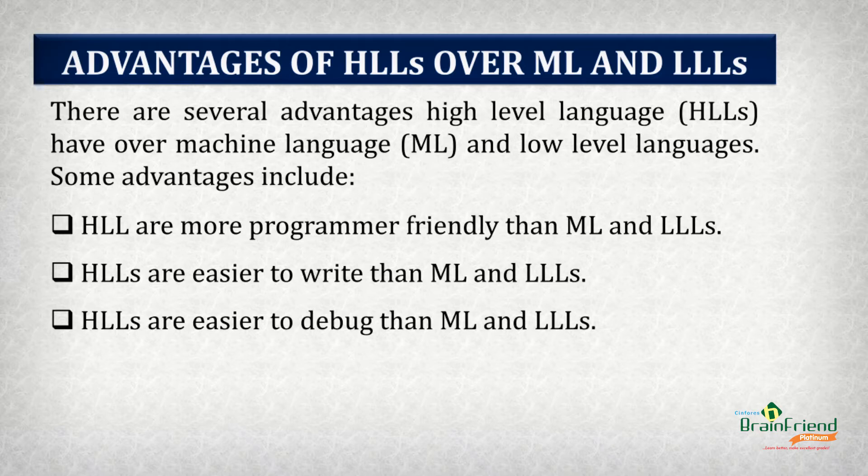Having looked at the three classes of programming languages, some advantages of high-level languages over machine language and low-level languages include: high-level languages are more programmer friendly; they are easier to write; and finally, it is easier to debug high-level languages. To debug simply means to identify and correct errors in code.